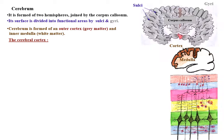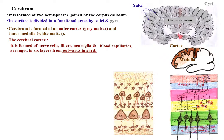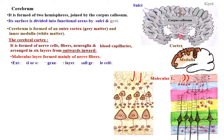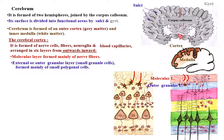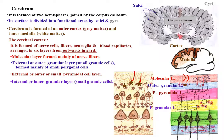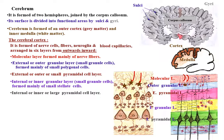The cerebral cortex is formed of nerve cells, fibers, neuroglia, and blood capillaries arranged in six layers. From outwards inwards, they are: the molecular layer, formed mainly of nerve fibers; the external granular layer, formed mainly of small polygonal cells; the external small pyramidal cell layer; the internal large pyramidal cell layer; and the multiform or polymorphic layer, formed of cells of various shapes.